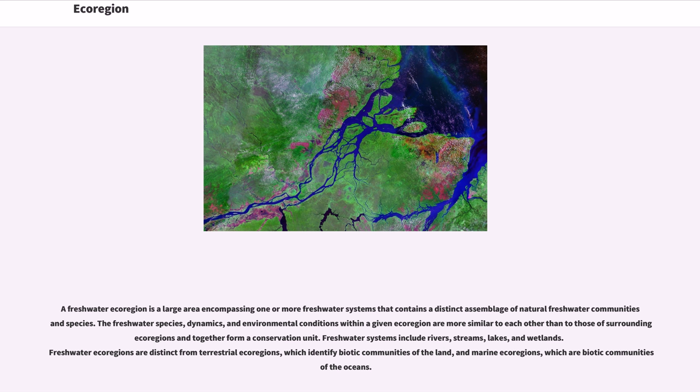A freshwater ecoregion is a large area encompassing one or more freshwater systems that contains a distinct assemblage of natural freshwater communities and species. The freshwater species, dynamics, and environmental conditions within a given ecoregion are more similar to each other than to those of surrounding ecoregions and together form a conservation unit. Freshwater systems include rivers, streams, lakes, and wetlands. Freshwater ecoregions are distinct from terrestrial ecoregions, which identify biotic communities of the land, and marine ecoregions, which are biotic communities of the oceans.